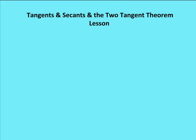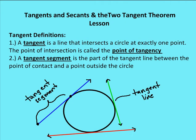Let's talk about tangents first. A tangent is a line that intersects a circle at exactly one point. I have three tangent lines — the blue line, the green line, and the red line. They're all tangent lines because each intersects the circle at exactly one point. That point of intersection is called the point of tangency.